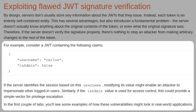We have a token example here where the username is Carlos and isAdmin is set to false. If the server identifies the session based on the username, modifying its value might enable an attacker to impersonate other logged-in users. Similarly, if the isAdmin value is used for access control, this could provide a simple vector for privilege escalation. In the first couple of labs, you'll see examples of how these vulnerabilities might look in real-world applications.